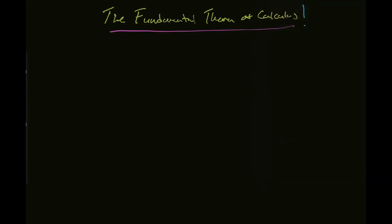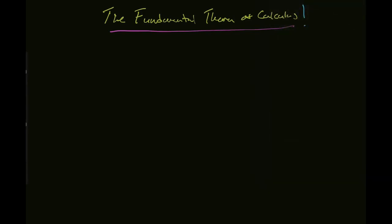Fundamental theorem comes in two parts. Part one says that if I have this function g of x, defined as the integral from a to x of f of t dt — and I'm going to stop in a minute and explain why we're using t instead of x, because this is one of the things that really trips people up. It's one of the more subtle things in calculus.